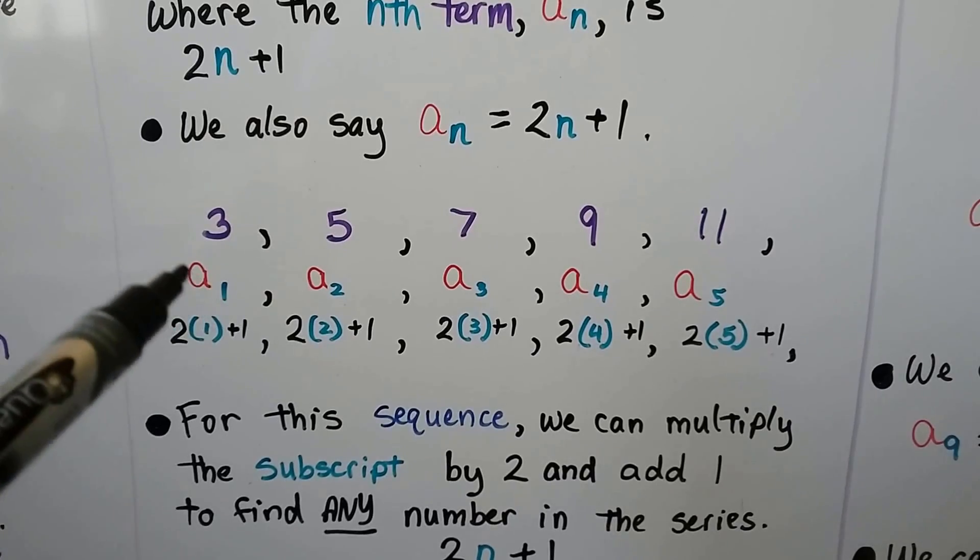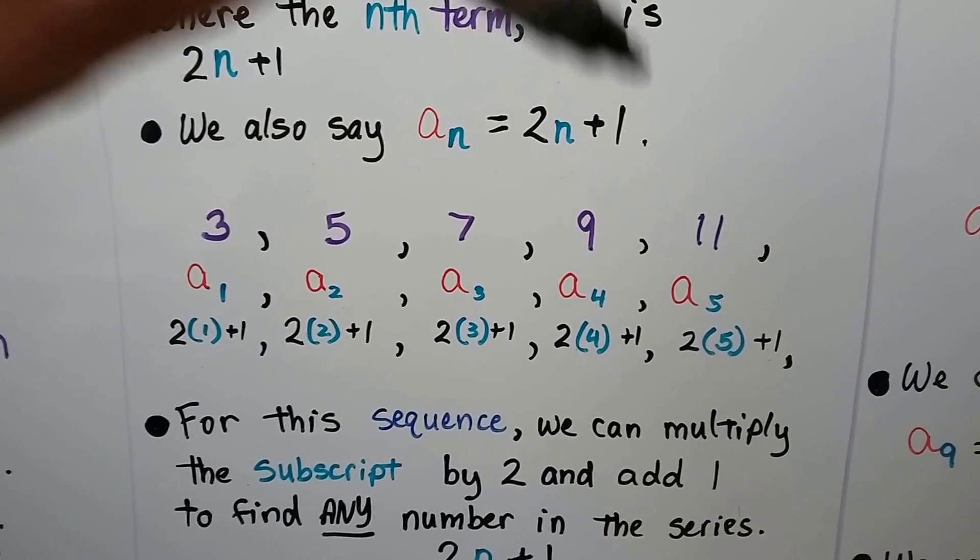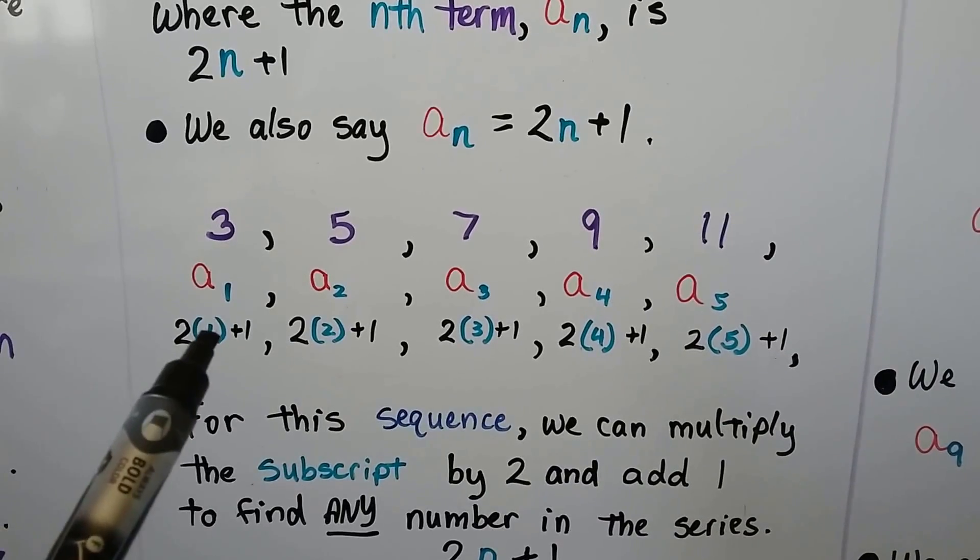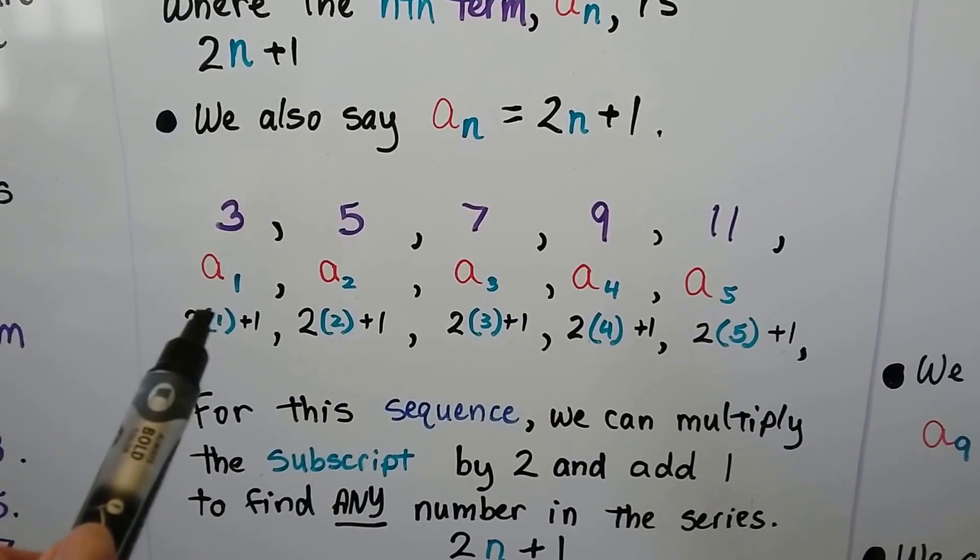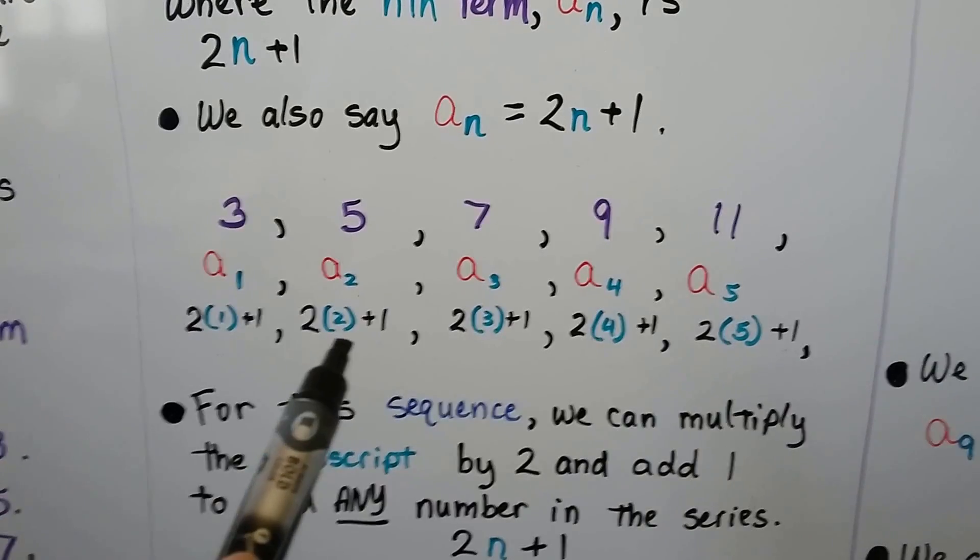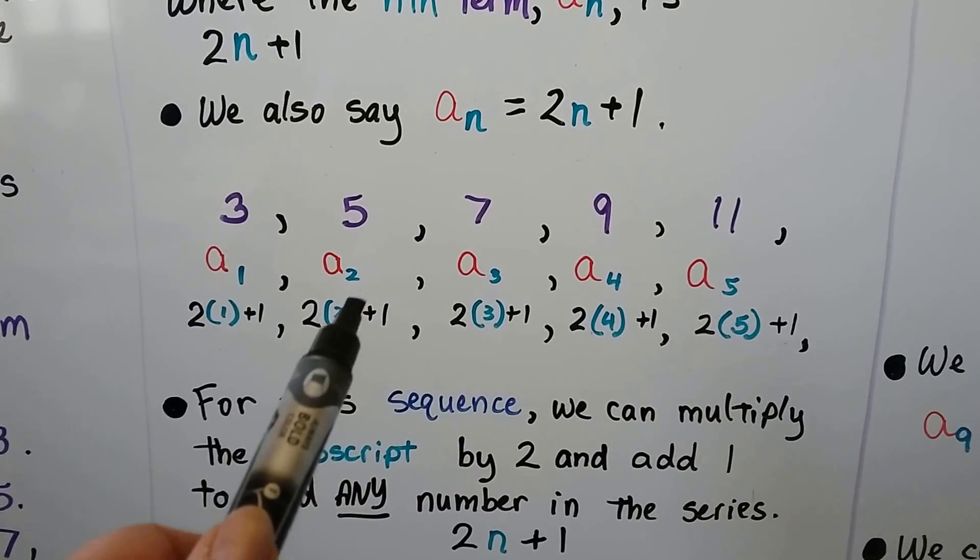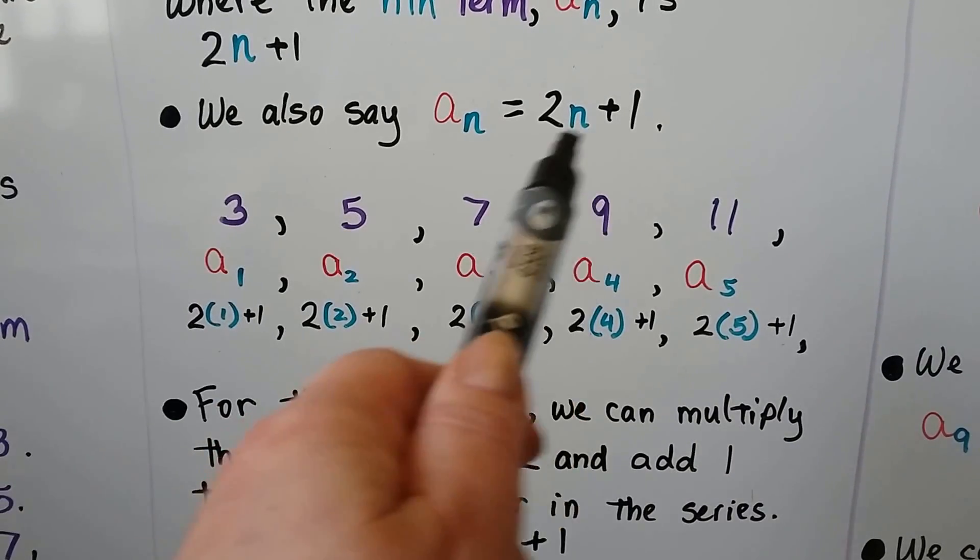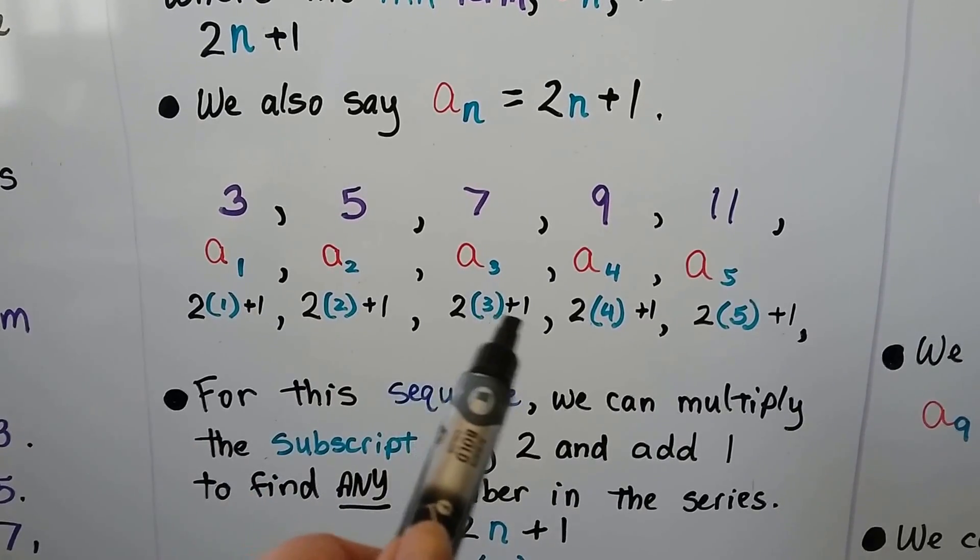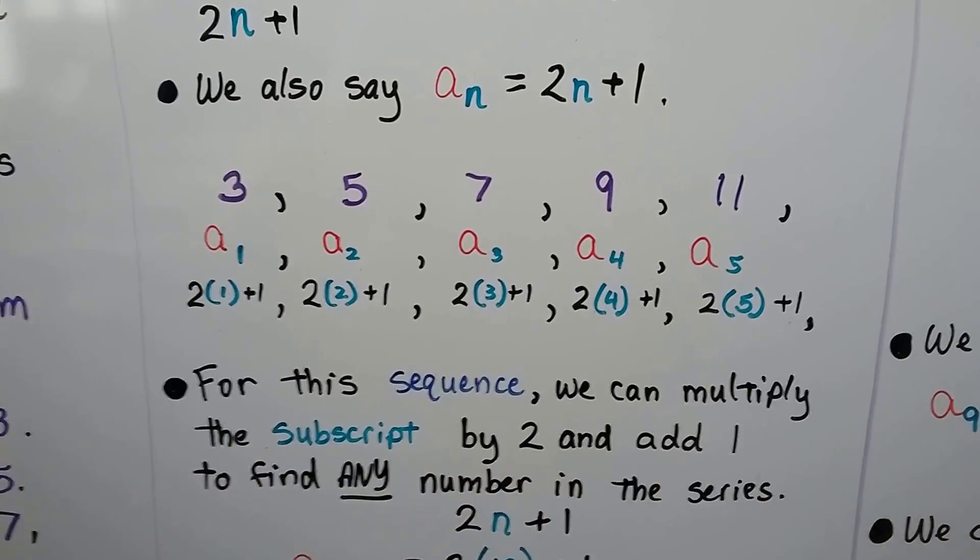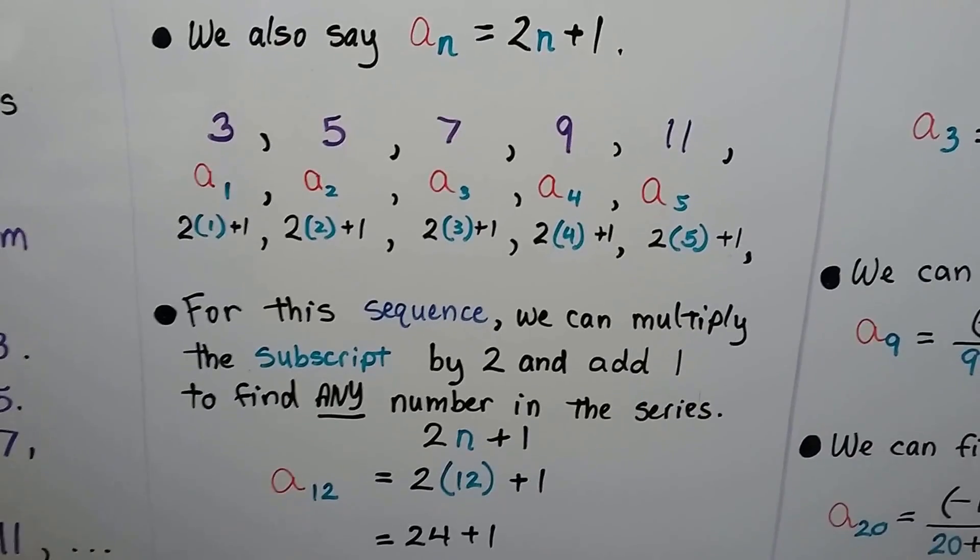Here we have 3 as our a sub 1. It's 2 times that subscript plus 1. The subscript is a 1, so it's 2 times 1 plus 1. 2 times 1 is 2, plus 1 is 3. This one, we've got a 2 for the subscript, so we have 2 times 2 plus 1. That's 4 plus 1, that's 5. We're just following this rule here. 7 is, we have a 3 subscript, so we're going to do 2 times 3 plus 1. That's 6 plus 1, that's 7. See how that works? For this sequence, we can multiply the subscript by 2 and add 1 to find any number in the series.